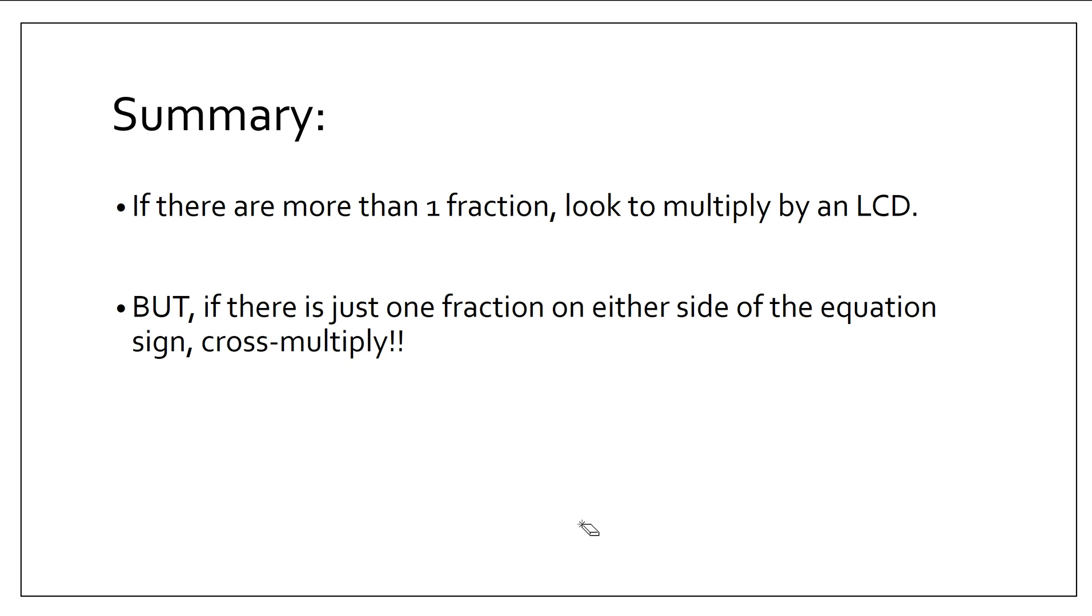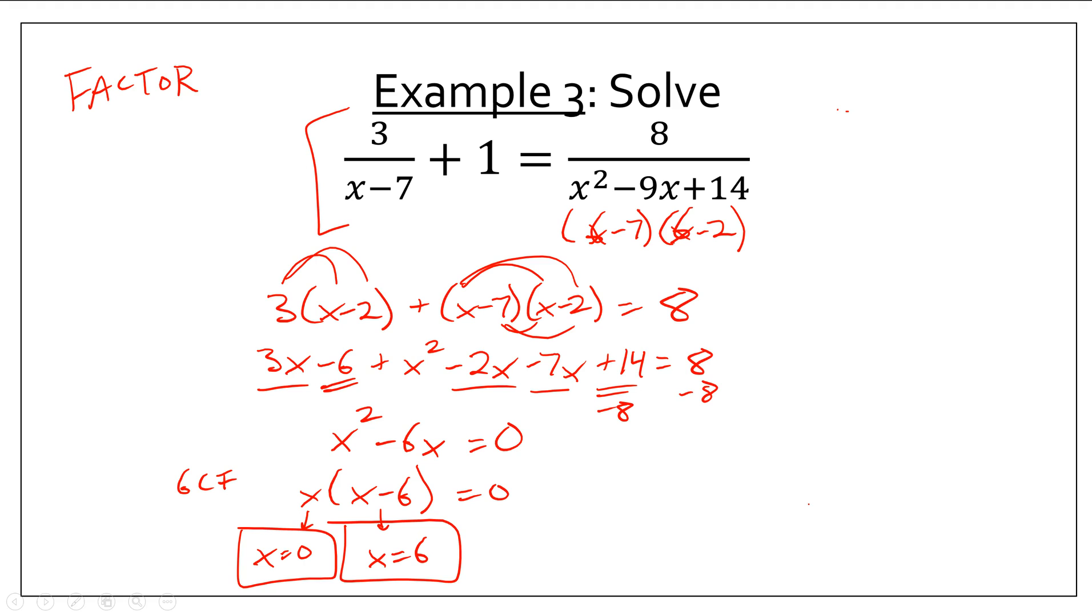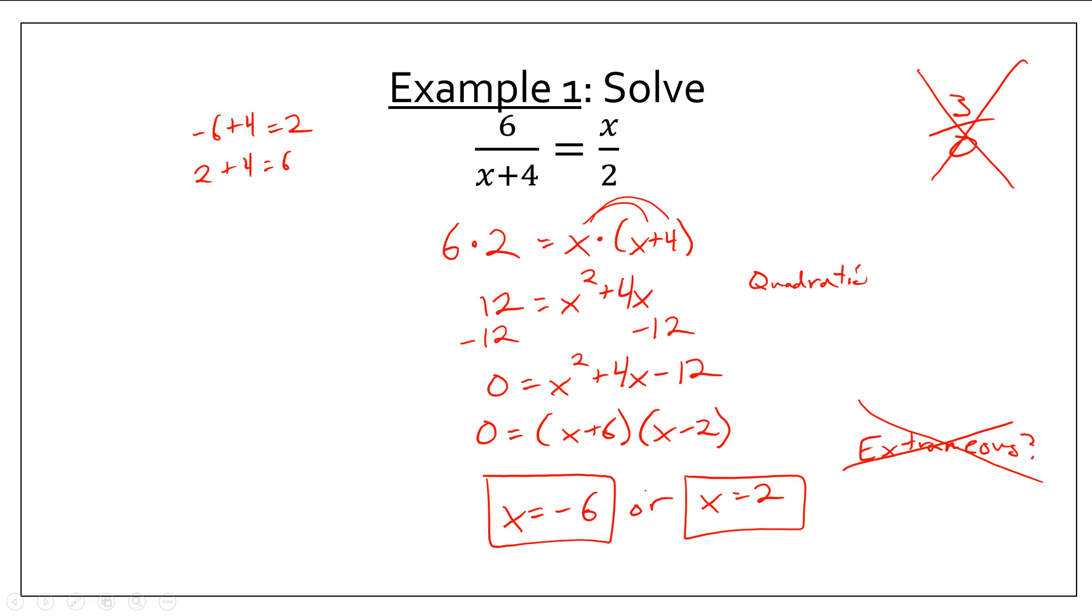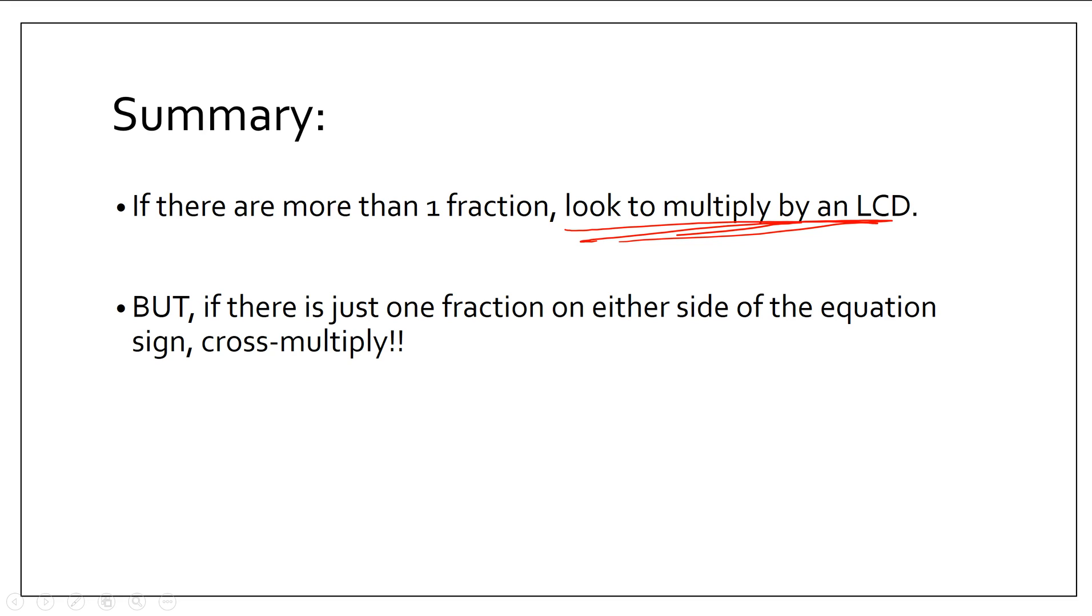So, summary. If there's more than one fraction, look to multiply by an LCD like we did in examples 2 and 3. And don't forget, if you have a situation like this with a very complicated denominator that could be factored, factor first. But, if there's just one fraction like we had in example 1, you can just cross-multiply. And that'll save you a lot of time.